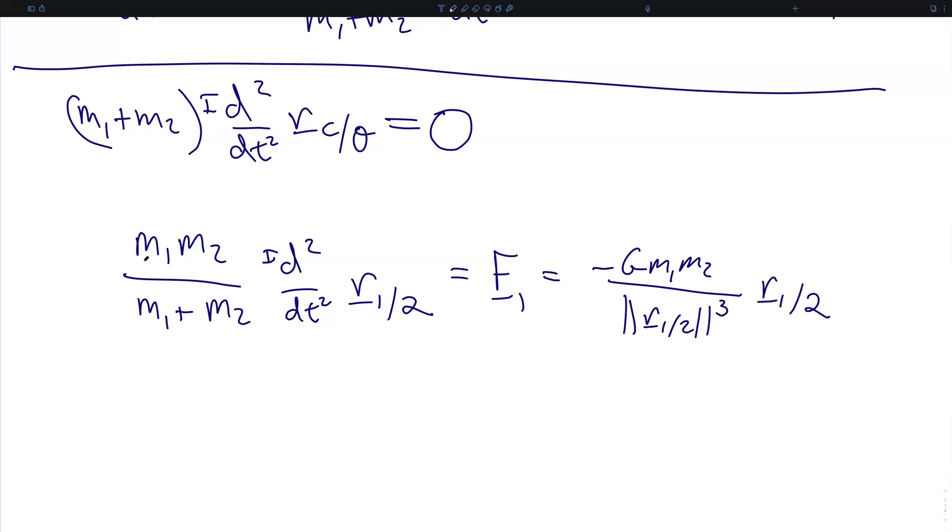The product M1 M2 over the sum M1 plus M2, which is sometimes known as the reduced mass of the system, times the second derivative of the position of particle 1 with respect to particle 2, is equal to the force on particle 1 due to particle 2. By Newton's law of gravity, this equals negative gravitational constant times the product of the masses over the distance between the particles squared, in the direction of the separation radius between the two particles.